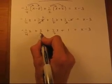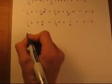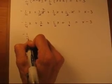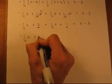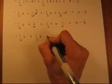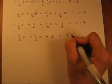And we can go ahead and add the 2 and the 1 together. It will just make things a little bit easier to look at. Minus 1/4 x, bring down the 1/2 x, plus 2 plus 1 is 3 equals x take away 3.